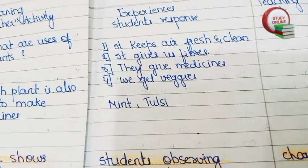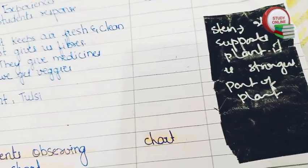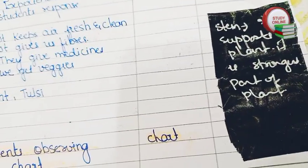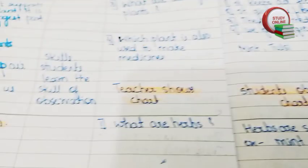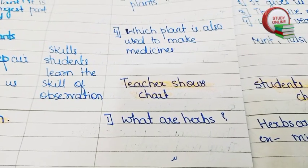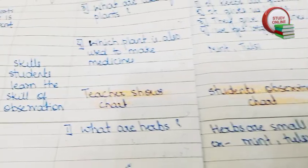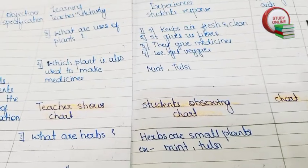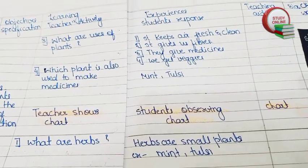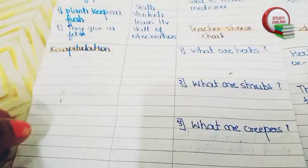After this, here you can see the blackboard work — I have written the definition of stem here. The teacher shows the chart, and students observe the chart. So once again, with the help of any teaching aid the teacher is carrying, she has to explain everything. For teaching aids, we have to write 'chart' here. Here you can see the recapitulation section.